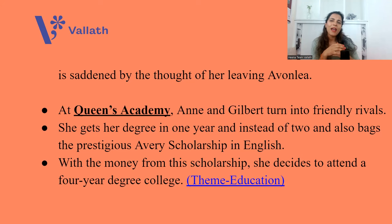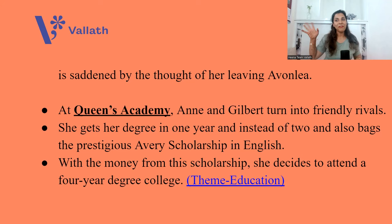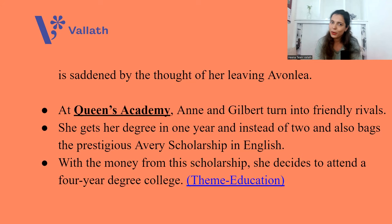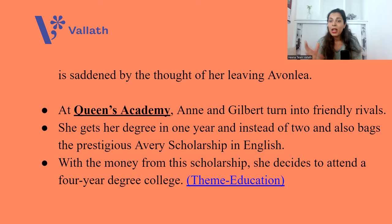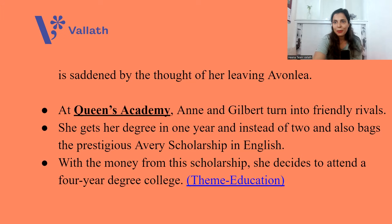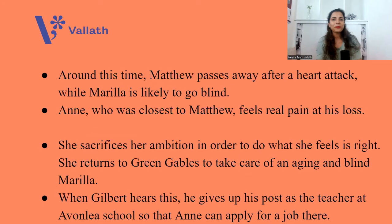At Queen's Academy, the rivalry between Anne and Gilbert continues but shifts from enemy rivalry to friendly rivalry — with feelings of romanticism developing. There's a movie also based on this novel. Because of her intelligence, Anne gets her degree in one year instead of two at Queen's Academy, and she wins the prestigious Avery scholarship in English. From this money she decides to attend a four-year degree college. The theme of education is discussed here, and we can see Anne's clear progression — supported by Matthew and Marilla, believing in herself, and finding nature her very good friend.